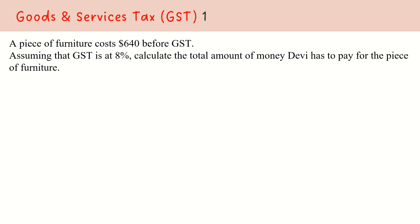We will now move on to goods and services tax examples. Let's start with a simple example first. In this question, it says that a piece of furniture costs $640 before GST. Assuming that the GST is at 8%, we want to calculate the total amount of money Devi has to pay for this piece of furniture, inclusive of the 8% GST.